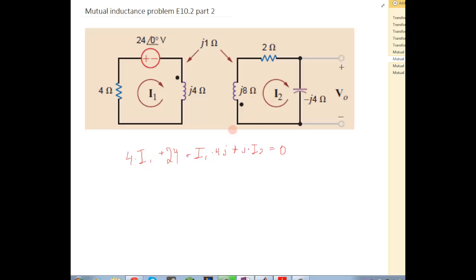So do the same thing on this side. We have I2 times 8J plus I1 times J for that mutual inductance.